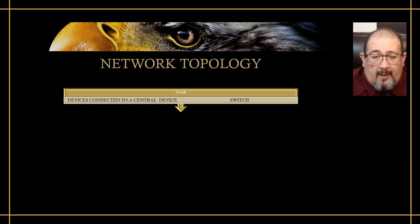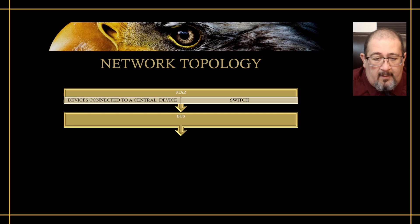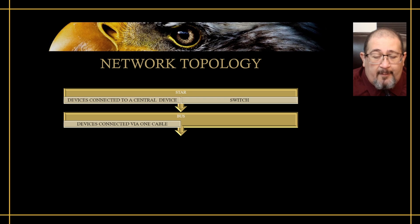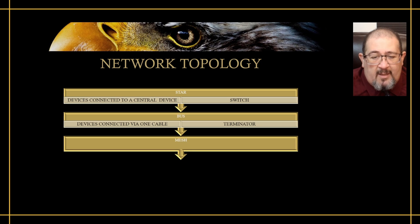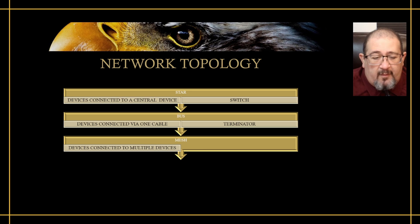The next type of topology is known as a bus topology. Here, devices are connected via one cable only, and typically at the ends of the cables are terminators so that the signal doesn't bounce back and forth. When I want to have redundancy in my network in case one connection or cable fails, then I have a mesh topology. In a mesh topology, devices are connected to multiple devices using multiple NIC cards and multiple cables.